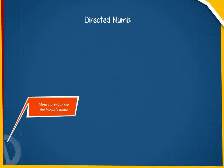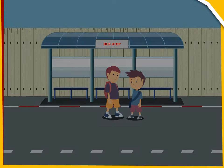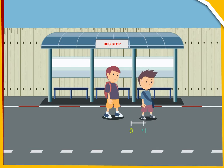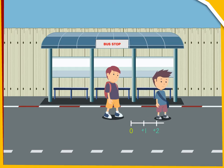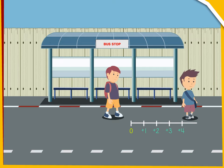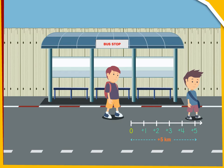Directed Numbers. Arnav walks 5 kilometers towards the east direction from the bus stand. Let us write it as plus 5 kilometers.